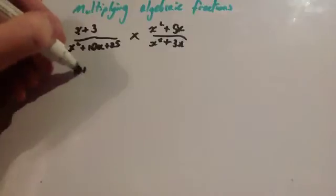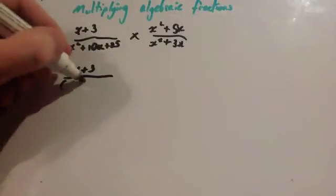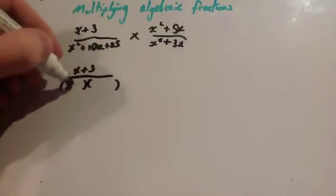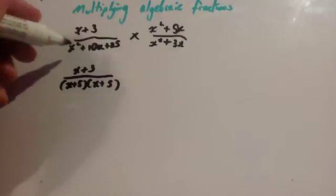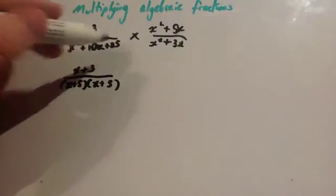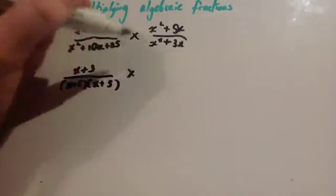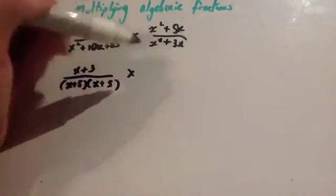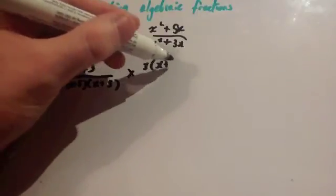So, we'd have X plus 3, that doesn't factorize, over, this would be bracket, bracket, bracket, bracket, bracket, X plus 5X plus 5. Okay. Because X squared plus 10X plus 25 would factorize to be X plus 5X plus 5 times. X squared times 5X. X comes out as a common factor there. So, you're going to have X bracket X plus 5.